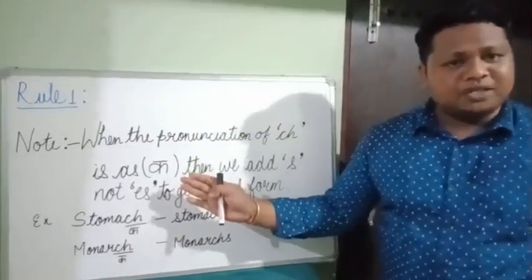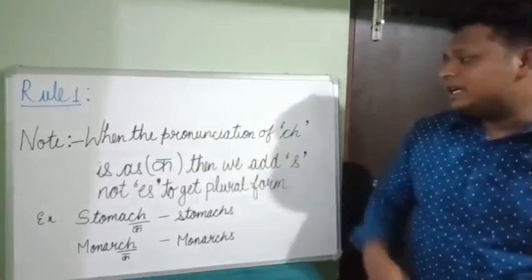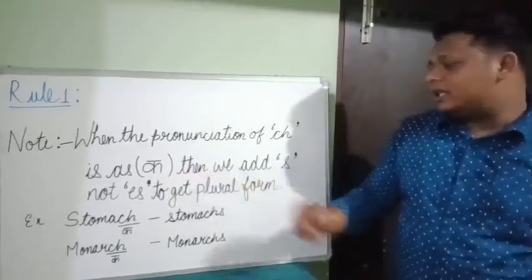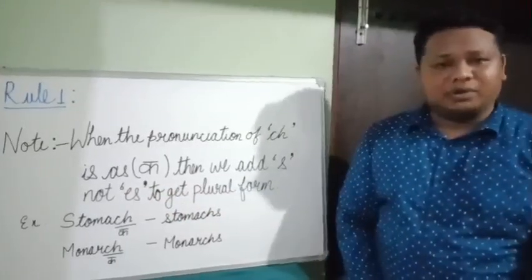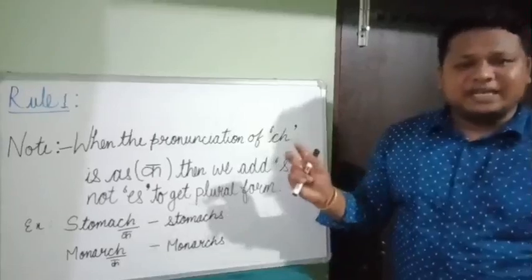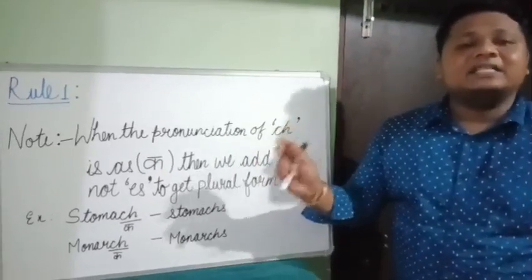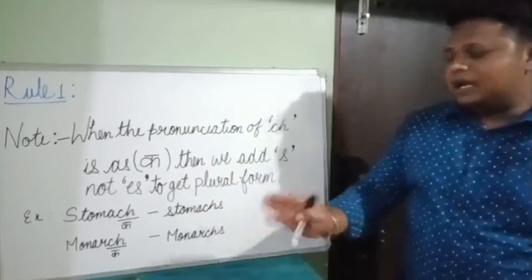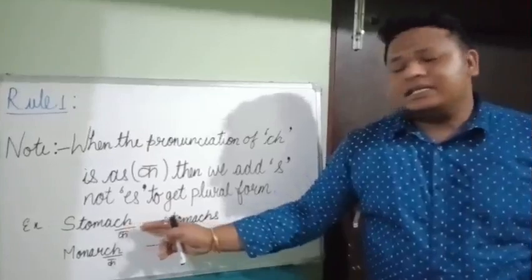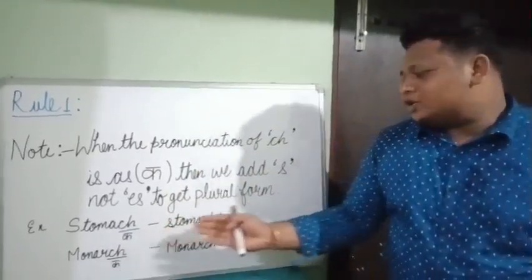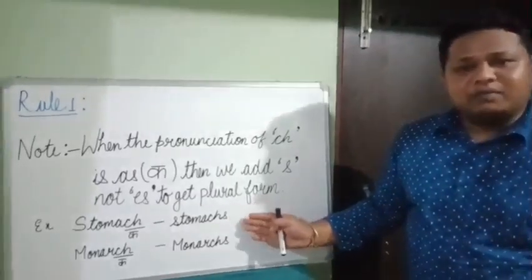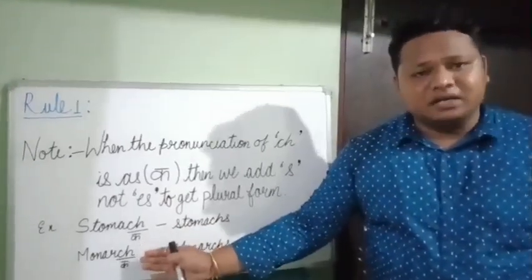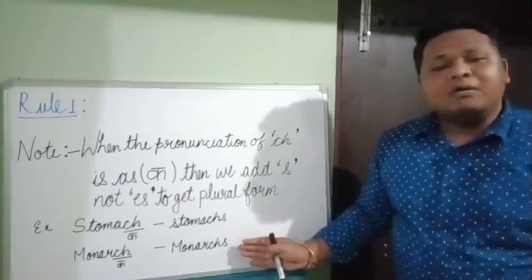There is an important note in rule one: when the pronunciation of a noun that ends with CH is as K, then we add S, not ES, to get the plural form. For example, stomach — here CH is pronounced as K, so we add S to make the plural form: stomachs. Monarch — CH is pronounced as K, so we add S: monarchs.